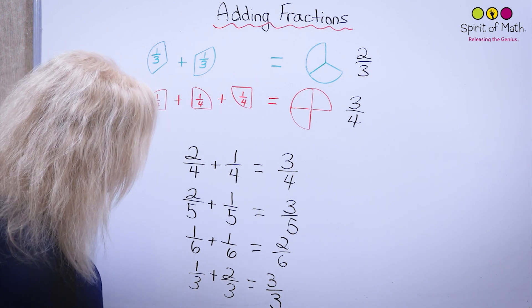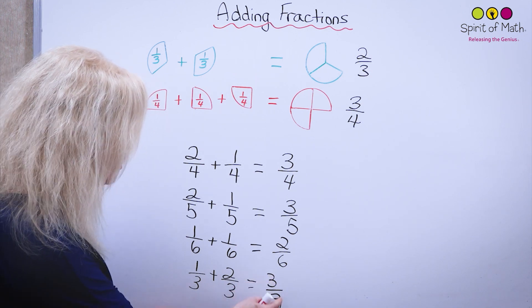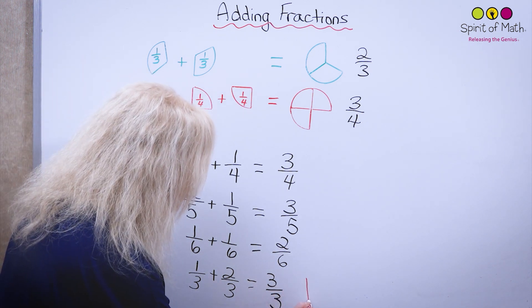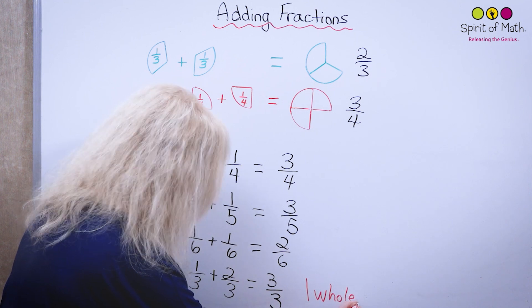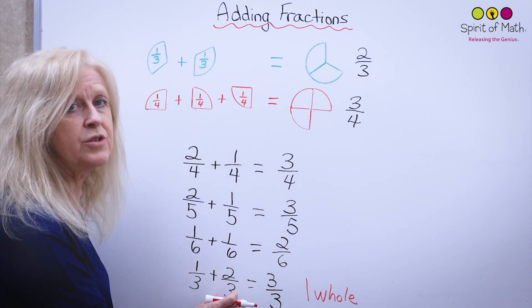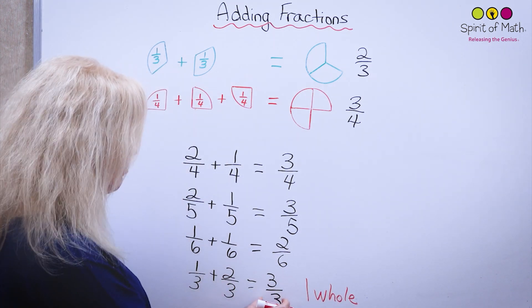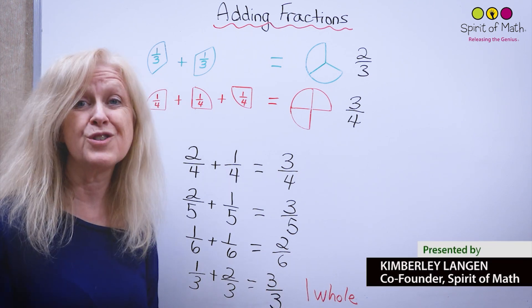And so really, if you have three thirds, that is the same as one whole. That's like saying you had one third of a circle plus two thirds of a circle, which gives you three thirds of a circle, which is one whole circle.